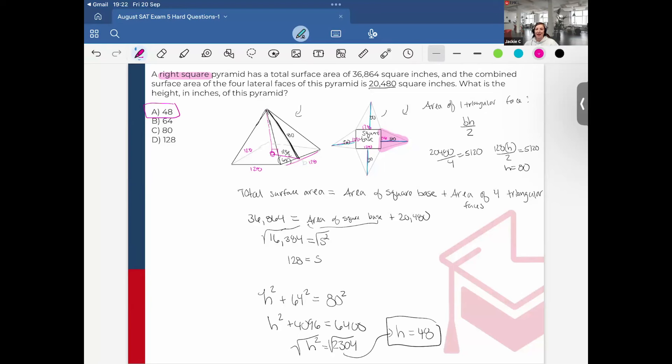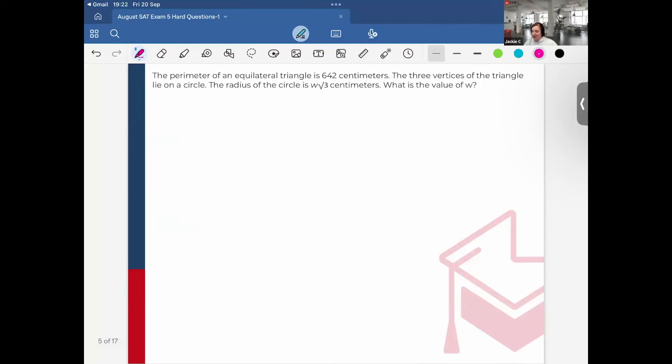I've heard of a lot of triangular prisms or right square pyramids appearing on the SAT. So this would be good to know. I hope this was useful and it helps you see with the visuals here as well.